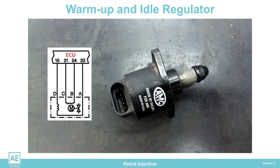With a two-coil regulator, the problem occurs when the coil that closes the bypass line valve fails and the other coil opens the bypass line completely. When the engine is warmed up, the idle speed is increased. In such a condition, the temperature of the engine increases, which can lead to failure.